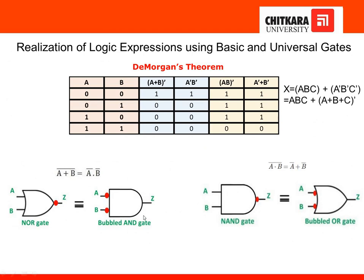De Morgan's theorem states that a NOR gate — (A + B)' — can also be written as a bubbled AND gate, meaning Ā · B̄. The other theorem states that a NAND gate — (A · B)' — can also be written as a bubbled OR gate, which is Ā + B̄.